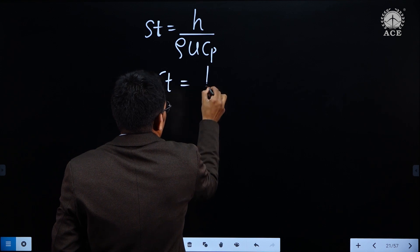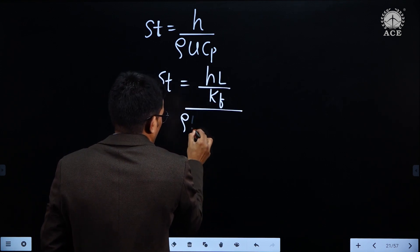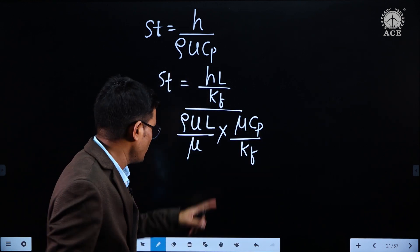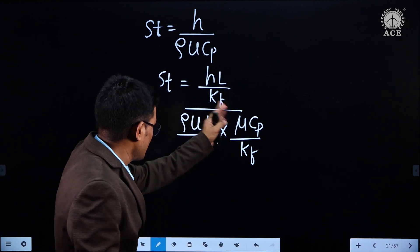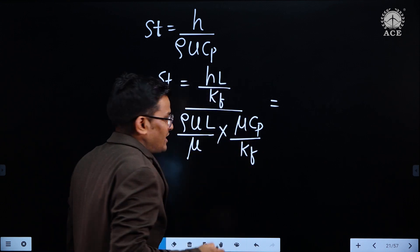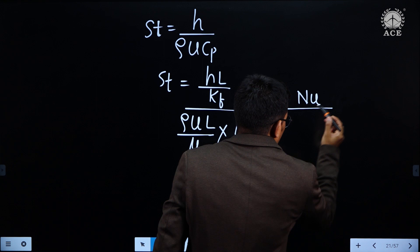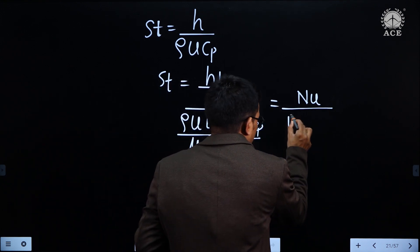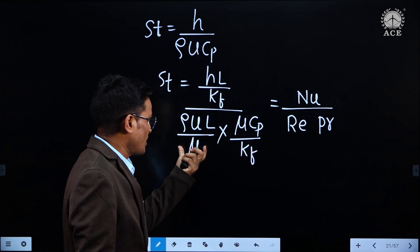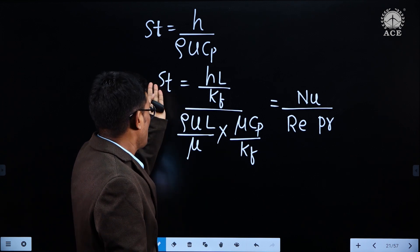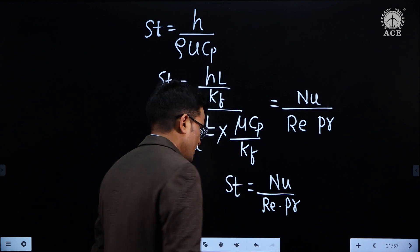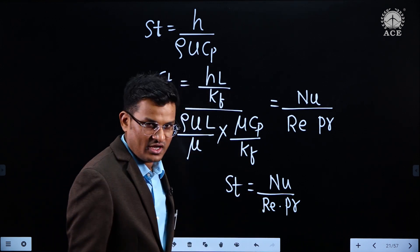Stanton number equals h / (rho × u × Cp). You can write this as (hL/Kf) / (rho × u × L / mu) × (mu × Cp / Kf). When you simplify — mu cancels out, L cancels out, Kf cancels out — you get h / (rho × u × Cp). Here hL/K is the Nusselt number Nu, rho×u×L/mu is the Reynolds number Re, and mu×Cp/Kf is the Prandtl number Pr. So Stanton number equals Nu / (Re × Pr).